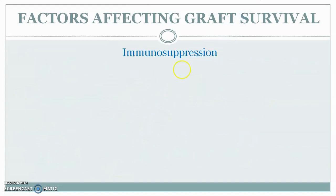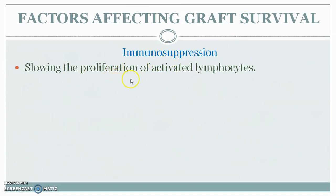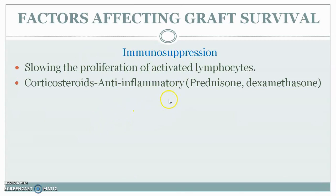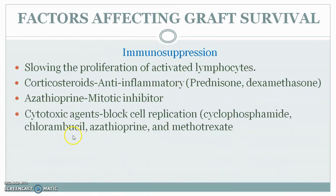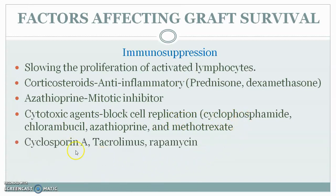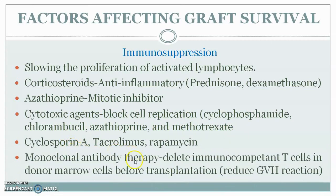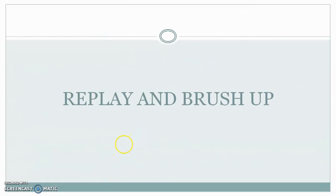For successful graft survival, immunosuppression is used to slow the proliferation of activator lymphocytes. Corticosteroids and anti-inflammatory agents such as prednisone and dexamethasone are used. Azathioprine and other mitotic inhibitors prevent T cell multiplication. Cytotoxic agents block T cell replication. The most widely used is cyclosporin A; tacrolimus and rapamycin are also used. Monoclonal antibody therapy can delete immunocompetent T cells in donor bone marrow cells in the case of bone marrow transplantation.